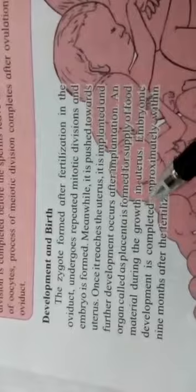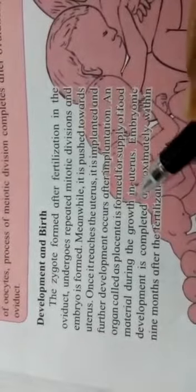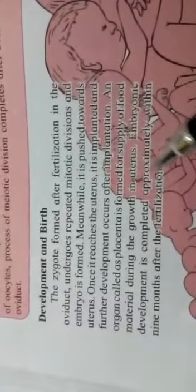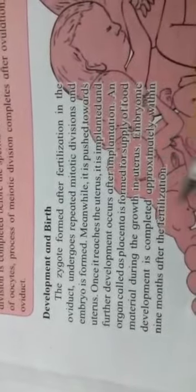The placenta is a connection between mother and child. Embryonic development will be completed within nine months after fertilization. After nine months, plus or minus nine days, the child will take birth.